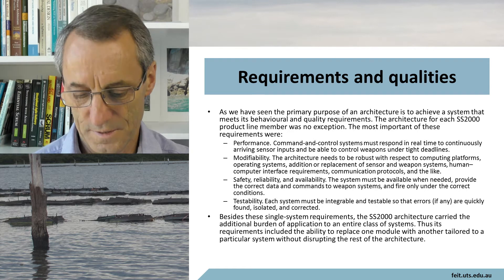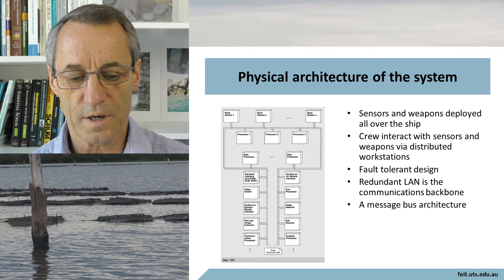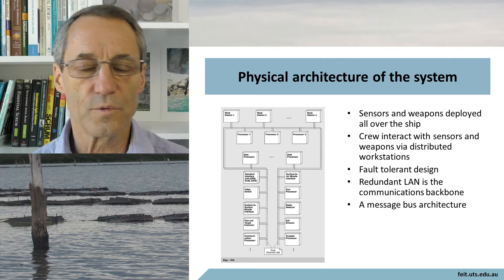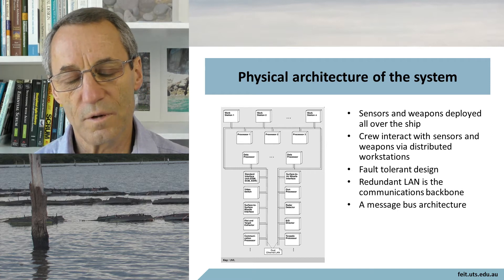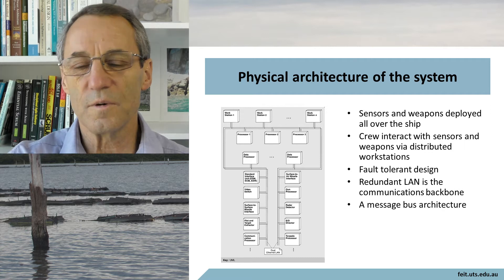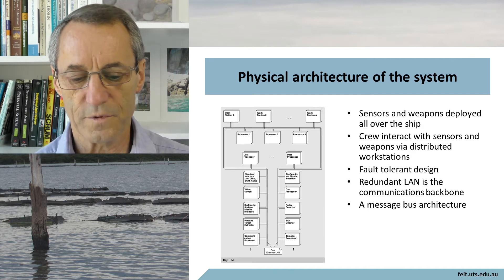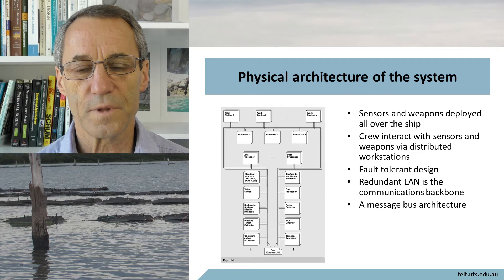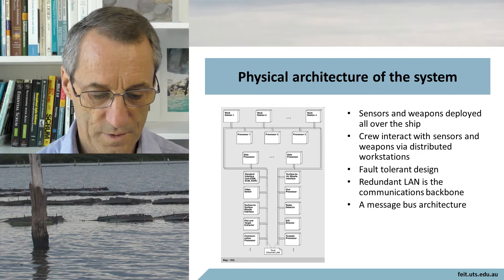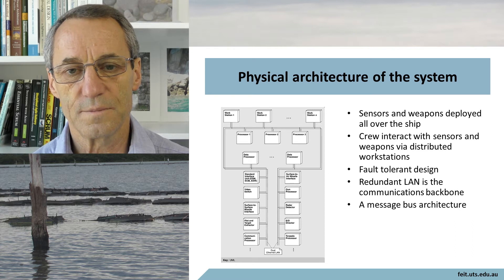Plug-in, plug-out capability is necessary for the physical architecture of the system. What you can see is essentially a message bus architecture that enabled all these different systems to communicate. Developing that message bus and the protocol for the messages would have been a very significant shift from previous attempts. The sensors and weapons are deployed all over the ship; the crew interact with them via distributed workstations — essentially 'sail by wire.' It had to be a fault-tolerant design, featuring a dual redundant LAN as the communications backbone.